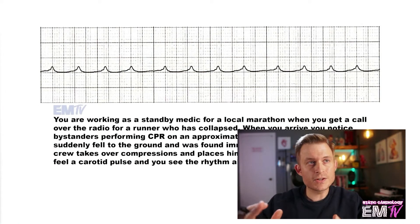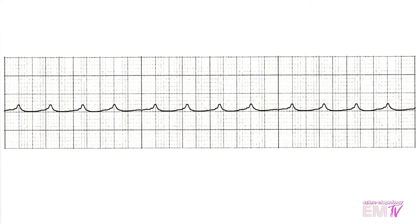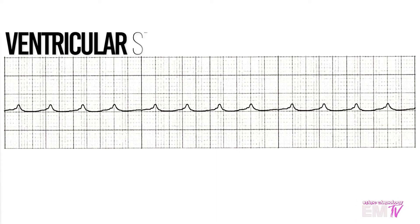So this is definitely not a good scenario to have. Let's go ahead and take a look at the rhythm and see if we can identify it. Normally the first thing I do when identifying a rhythm is to calculate a rate based on counting the R waves. Unfortunately there are no R waves present here. What I am seeing though are P waves with absolutely no ventricular activity. Because of this, my diagnosis of the rhythm is going to be ventricular standstill.